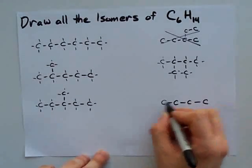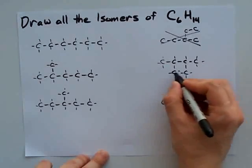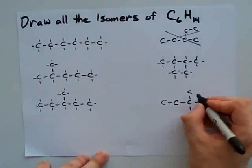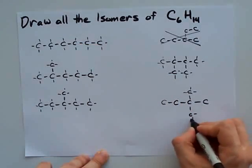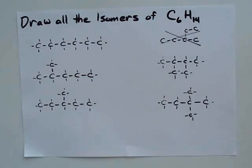This can be the other isomer. Again, a count of 14 hydrogens, so this is equal to C6H14. This will be an isomer of C6H14.